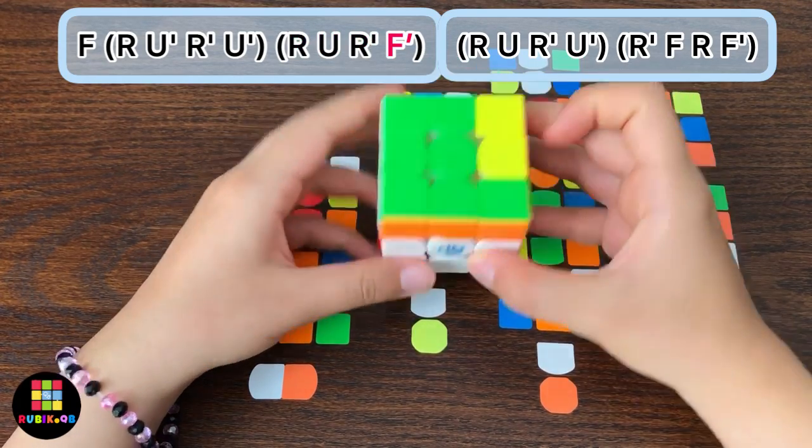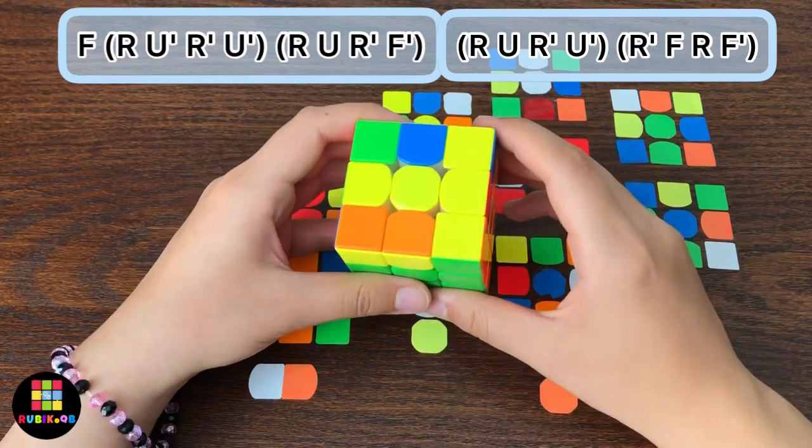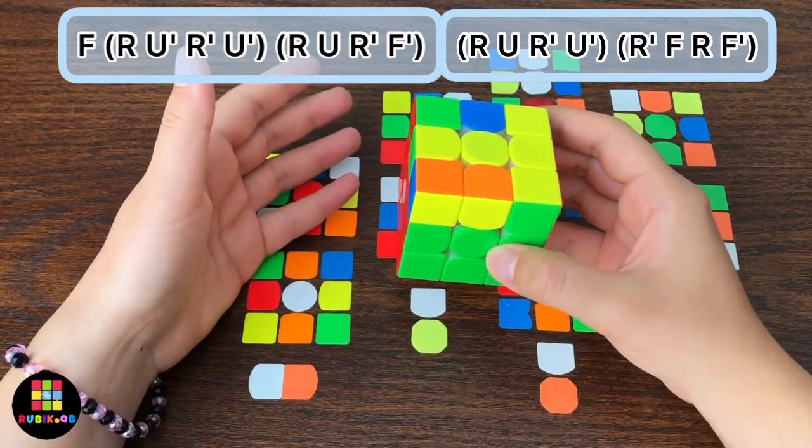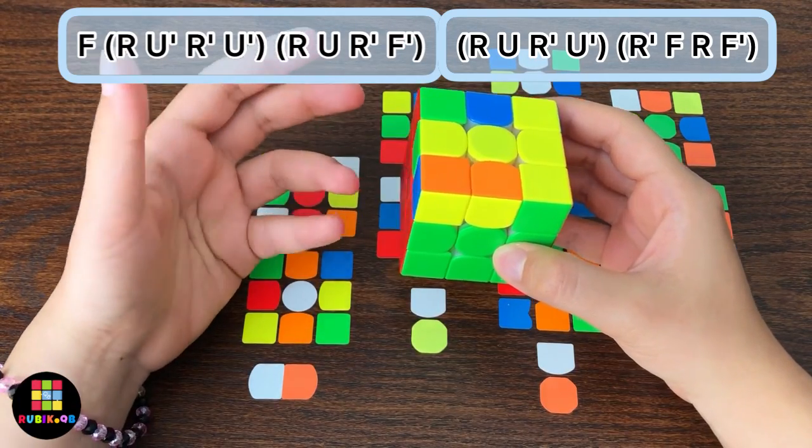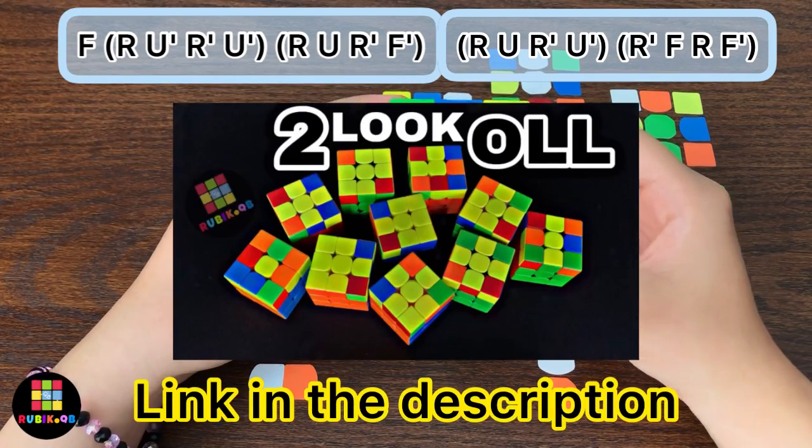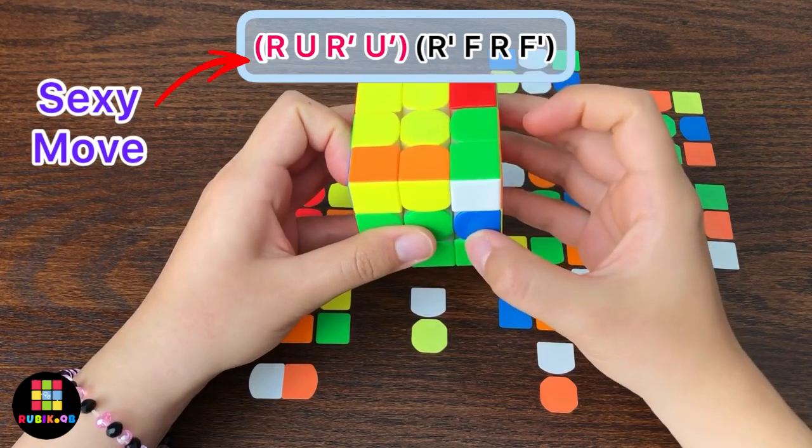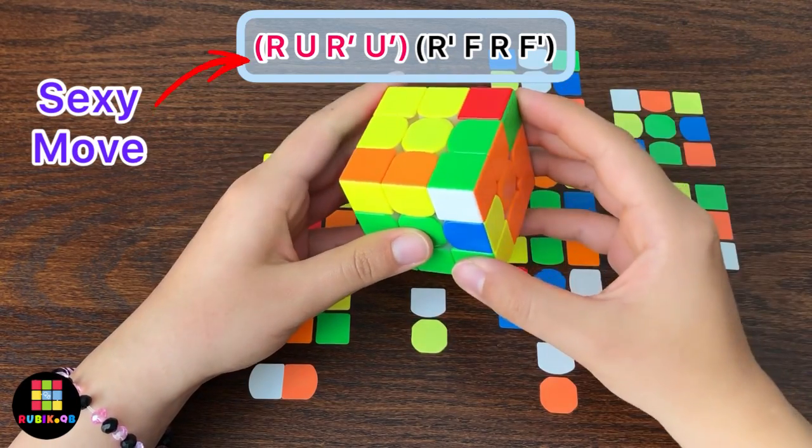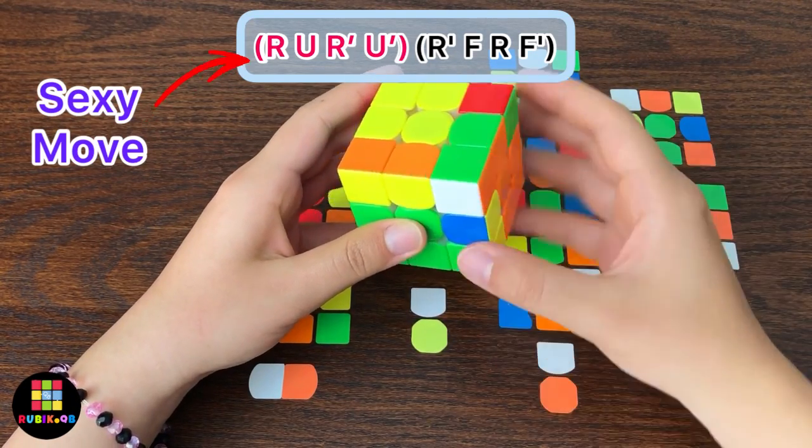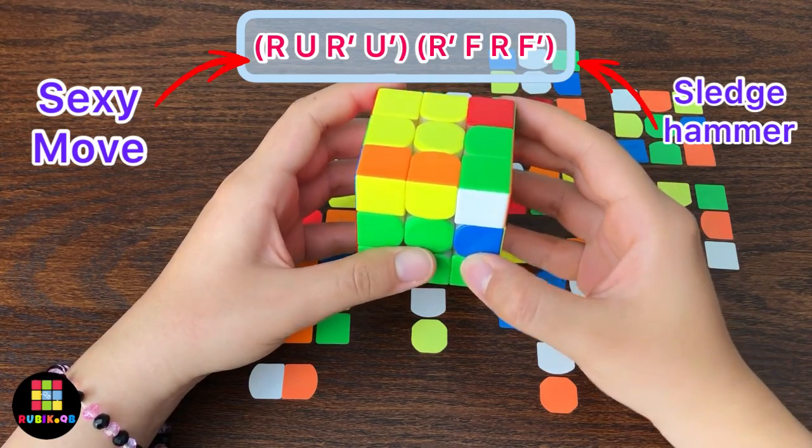And I'm sure you all know the rest of the algorithm because this is exactly what I told you in 2 Look OLL video for the bar case. So do R U R' U', or sexy move, and then for inserting this pair do a sledgehammer or R' F R F'.